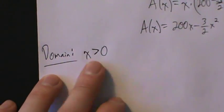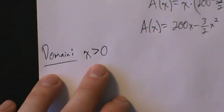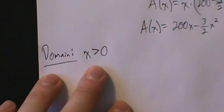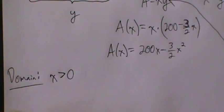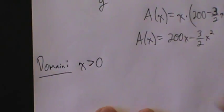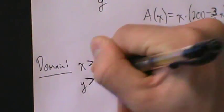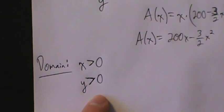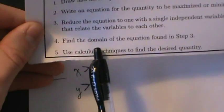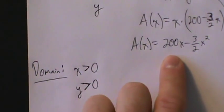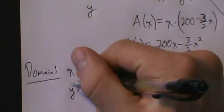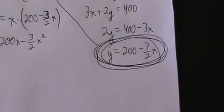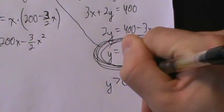Some instructors might include x = 0, so be aware of that. x also can't be too large — if x is too large, then y can't exist. So we also need y to be strictly positive. Both x and y must be strictly positive. But our domain restriction must be expressed only in terms of x. Y greater than zero, since y equals 200 − (3/2)x, means that expression must be strictly greater than zero.